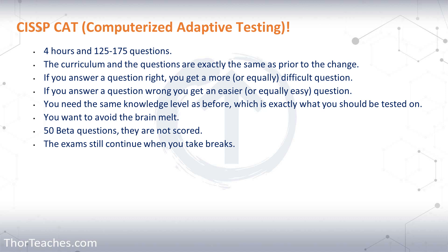With computerized adaptive testing, if you answer a difficult question right, you get a question that is more difficult but also worth more points. If you answer a question wrong, you get a question that is easier but also worth less points. That continues throughout the exam: right answer, harder question; wrong answer, easier question.